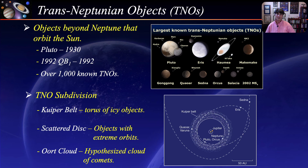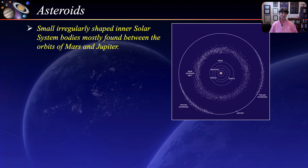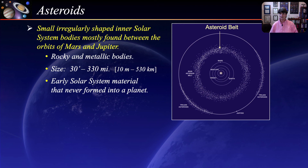Closer to home, asteroids are small, irregularly shaped inner solar system bodies, mostly found in a region between the orbits of Mars and Jupiter called the asteroid belt. They are small, rocky and metallic bodies ranging in size between 30 feet and 330 miles. The total mass of all objects in the asteroid belt is about 4% the mass of our Moon. They are thought to be early solar system material that never formed into a planet, and as such are considered messengers from the solar system's past — the substances they carry can provide answers about how our planet and solar system formed.